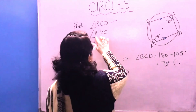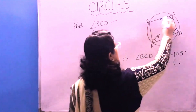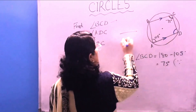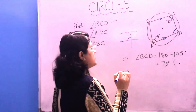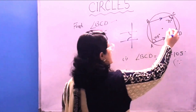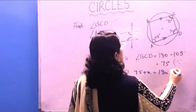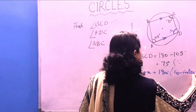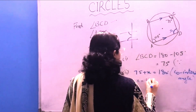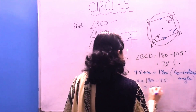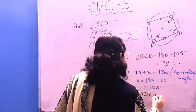Next, we need to find angle ADC. Since BC is parallel to AD and CD is the transversal, angles on the same side of the transversal — co-interior angles — are supplementary. So 75 plus X equals 180 degrees. Therefore X equals 180 minus 75, which is 105 degrees. So angle ADC is 105 degrees.